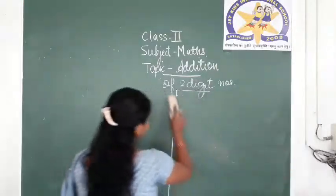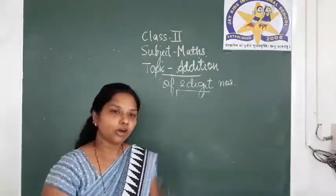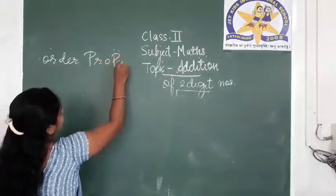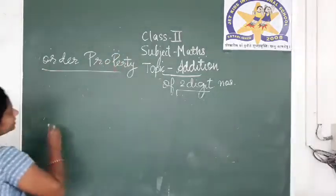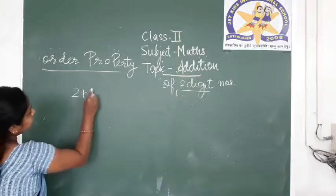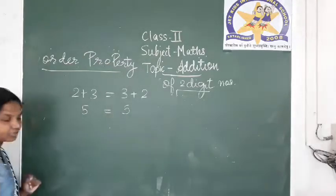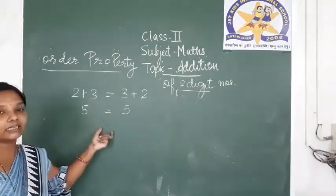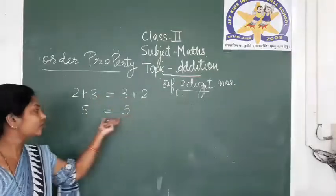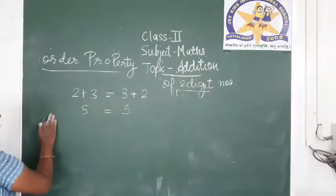What are the properties of addition? The first property is the order property of addition. In this property, you can add the numbers in any order. For example, if you add 2 plus 3 or 3 plus 2, both answers are the same. The answer does not change if you change the order of the numbers. This was addition of single digit numbers; let us take a two digit addition example.